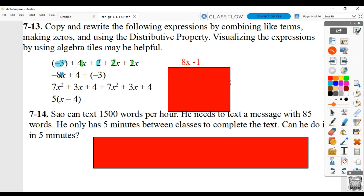For the second one, negative 8x cannot combine with anything, so that's going to be left alone. And 4 plus negative 3 would equal positive 1. So negative 8x plus 1.